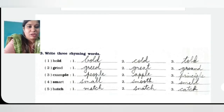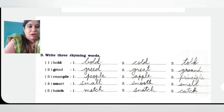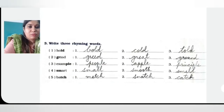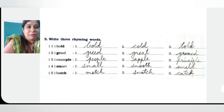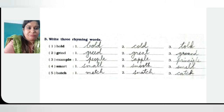Question number 3: Write 3 rhyming words. We write words according to their ending letters. For example, B-O-L-D — bold, C-O-L-D — cold, and T-O-L-D — told. All have L-D in the end.